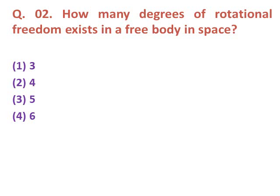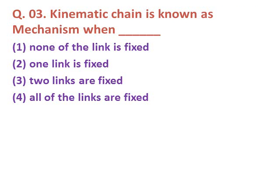Question two: How many degrees of rotational freedom exist in a free body in space? Option one: three. Option two: four. Option three: five. Option four: six. The correct answer is option one — three degrees of rotational freedom.